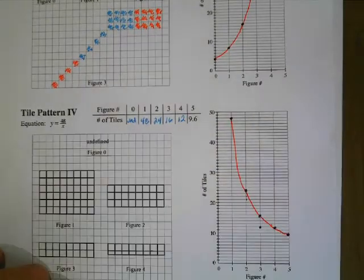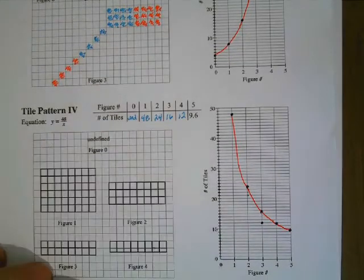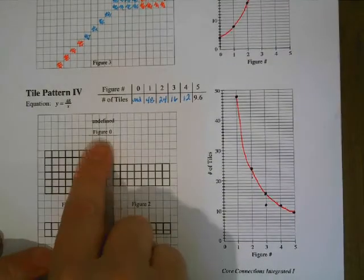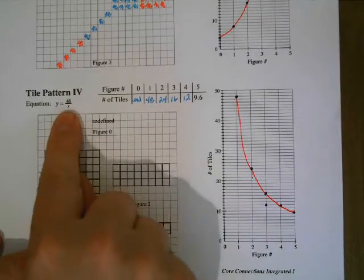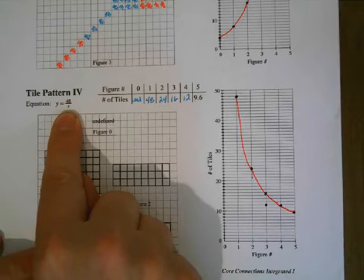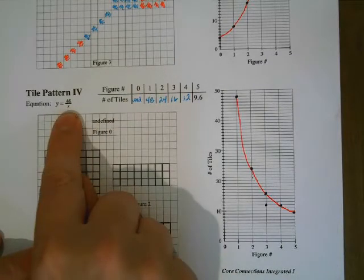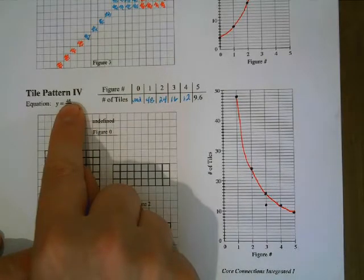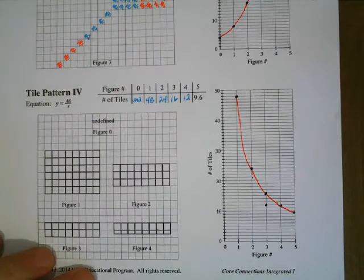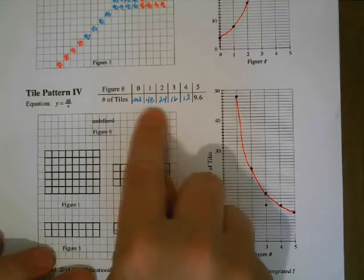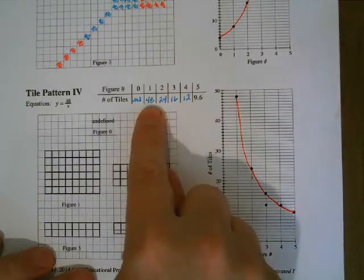So, pattern four, this is a different one. This is an inverse function here, 48 over x, you might not have seen that before. Figure zero is undefined. Why is it undefined? Because x is the figure number. If you put a zero there, you're saying that you're giving out 48 pieces of nothing. And there are no 48 pieces of nothing. So, that would be undefined, it's impossible.